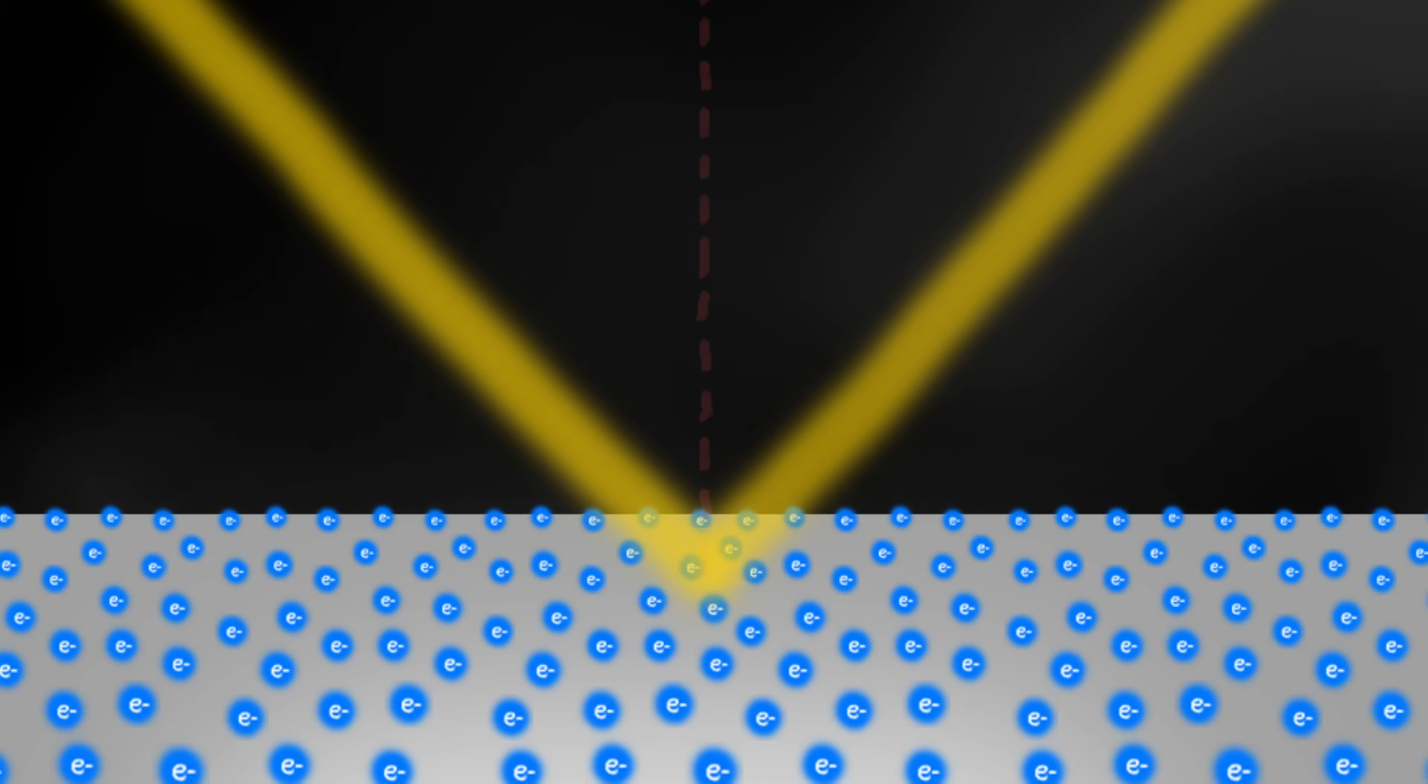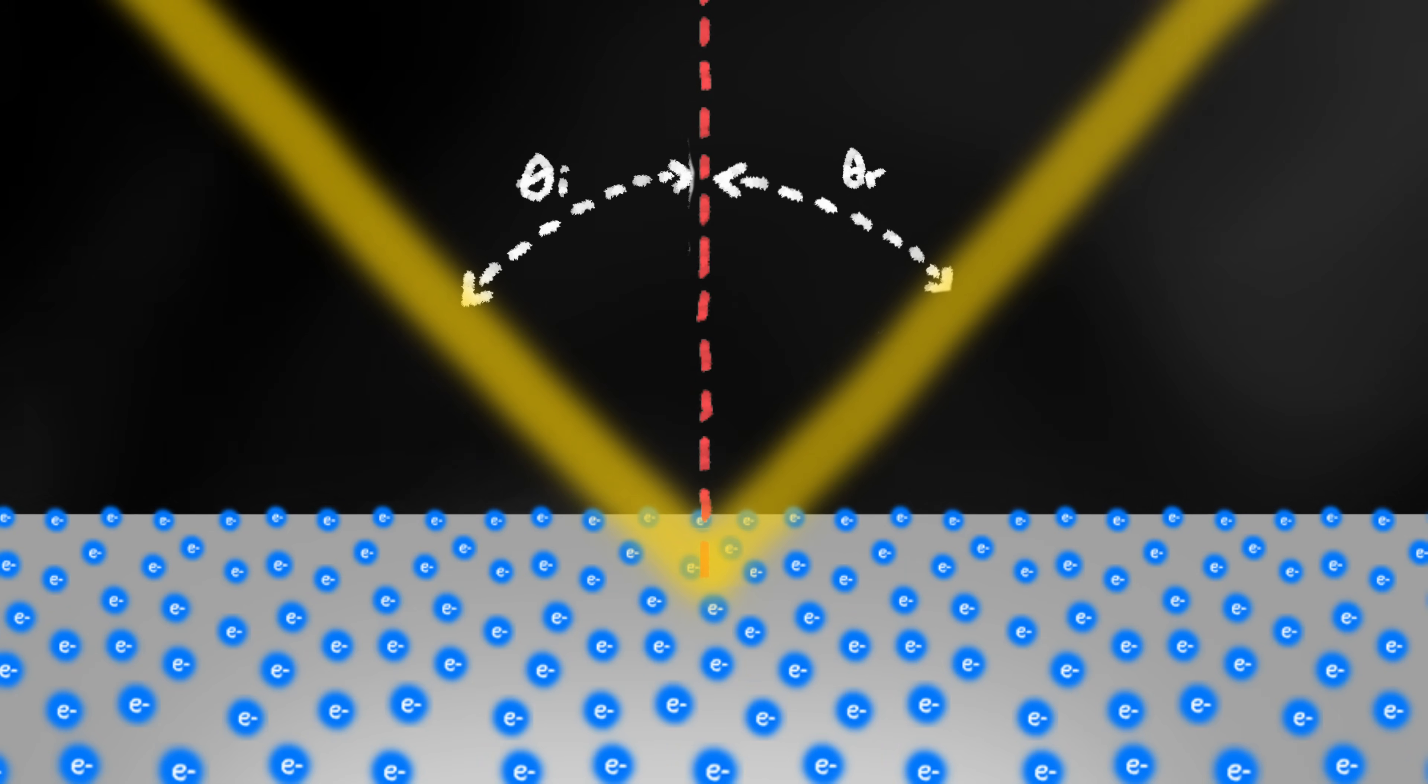And these electrons will begin to emit light in almost all directions. In most directions though, these waves are cancelled out due to destructive interference, except for one direction where the interference is constructive. This direction happens to be at an angle to the normal which is equal to the incident ray's angle.